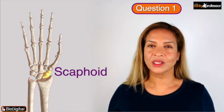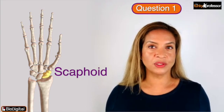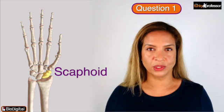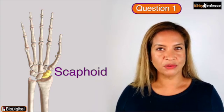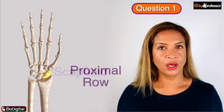The answers! Question 1. The scaphoid bone. The scaphoid is one of the bones in the wrist, or carpus as it's also known. The bones of the wrist are arranged in two rows,